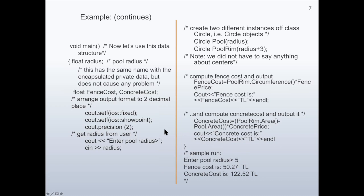If we execute the code for a sample run and the user enters 5 for the radius, then the fence cost is calculated. At the output device we will see 'fence cost is' followed by whatever is calculated as the fence cost value, then 'TL', and it goes to the next line. From the next part, the concrete cost is calculated and there is a cout statement. 'Concrete cost is' followed by whatever is calculated as the concrete cost is output, then 'TL', and it goes to the next line.